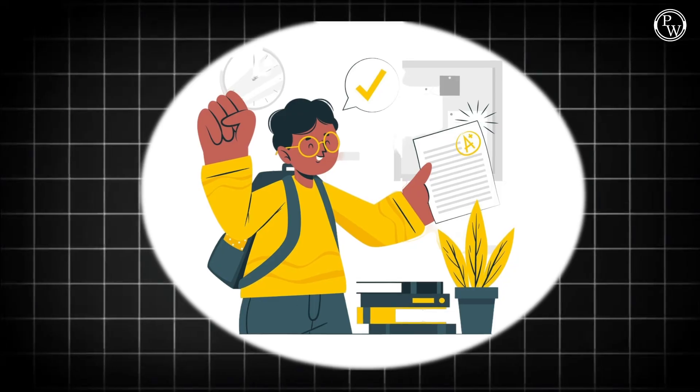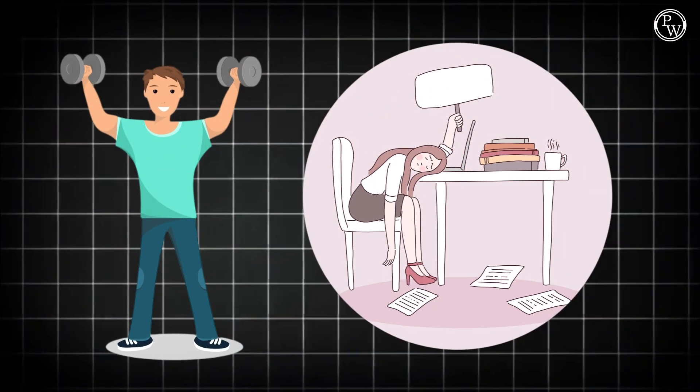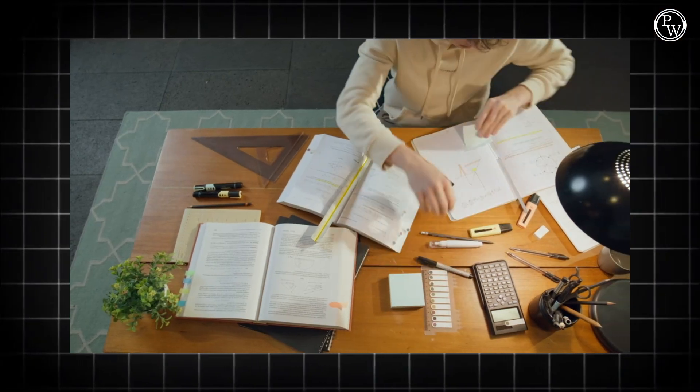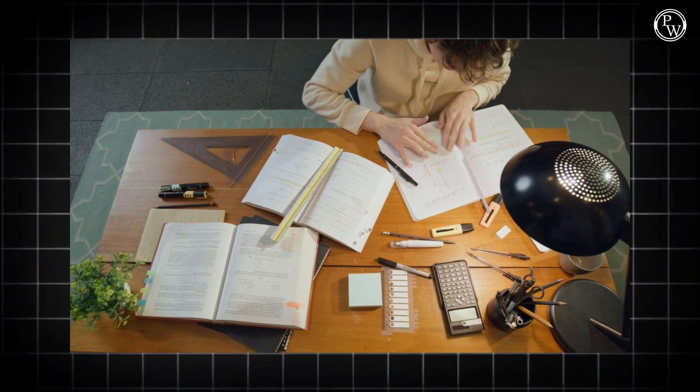Point number five: cutoffs and strategies for success. Cutoff marks usually range from 25 to 30 depending on the year and branch, and toppers often score around 90 marks — so aim high. Focus on both your strengths and weaknesses. Regularly take mock tests to gauge your progress and adjust your study plan accordingly. This strategy will help you stay on track and perform your best.